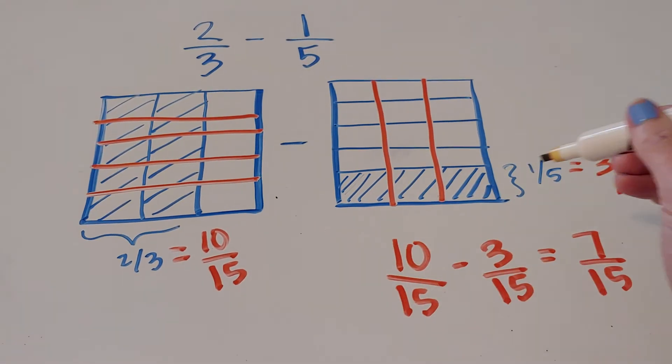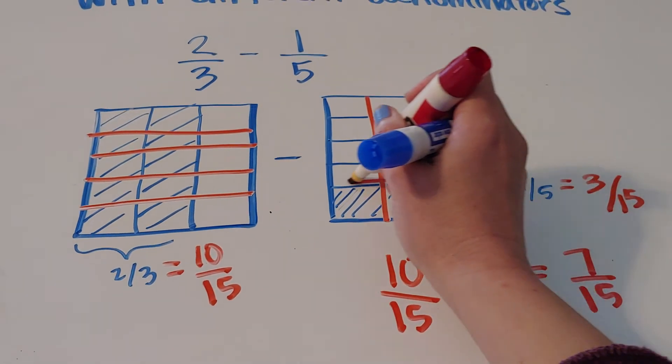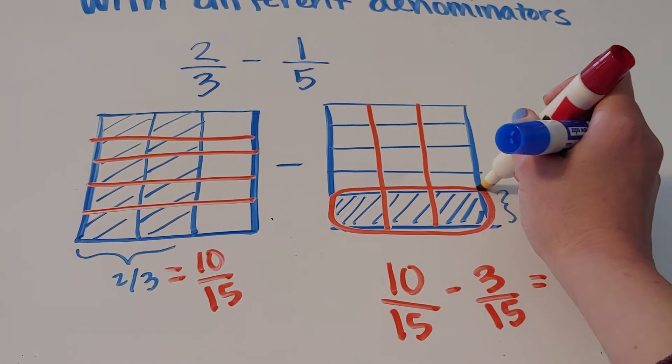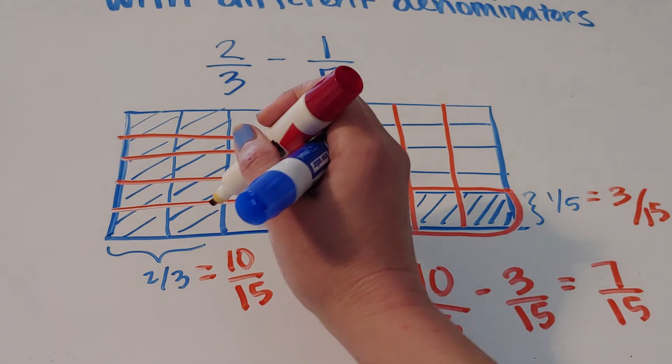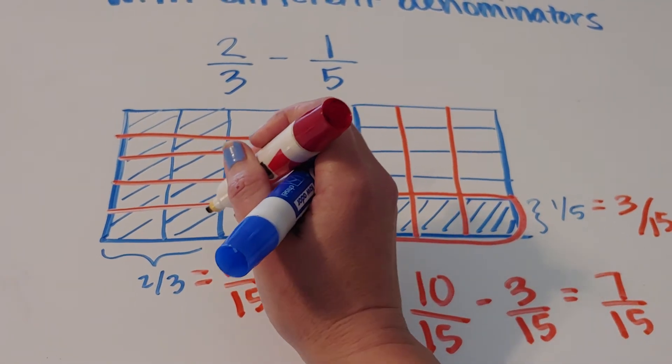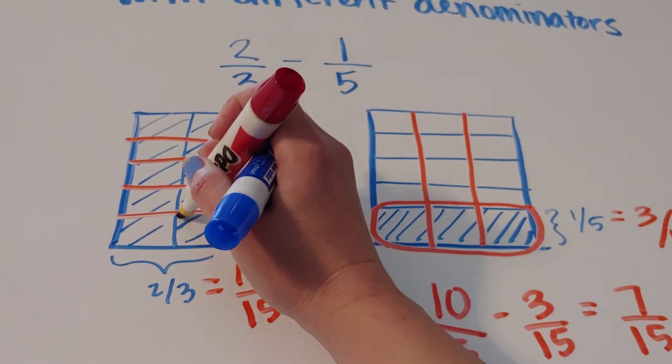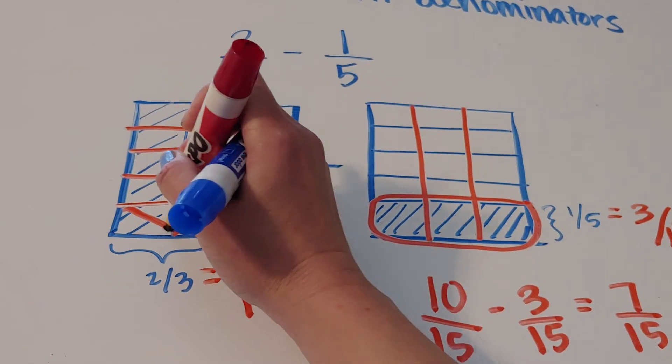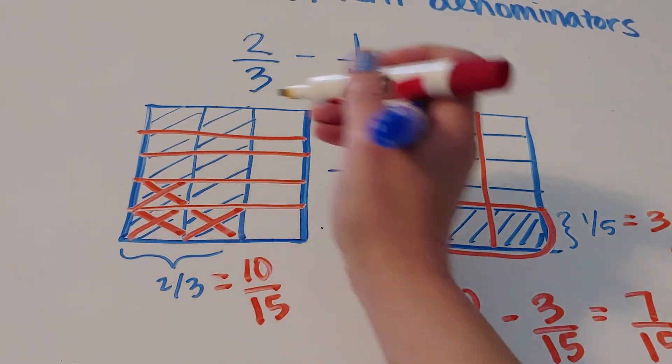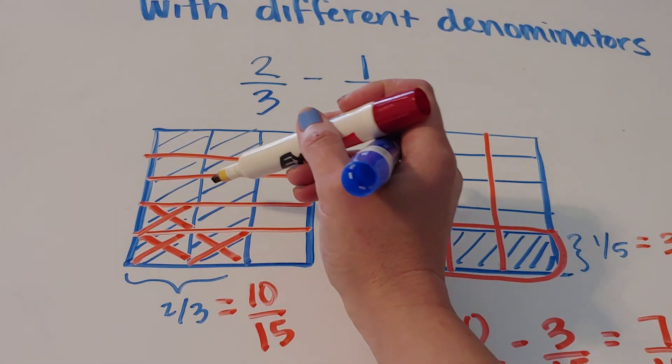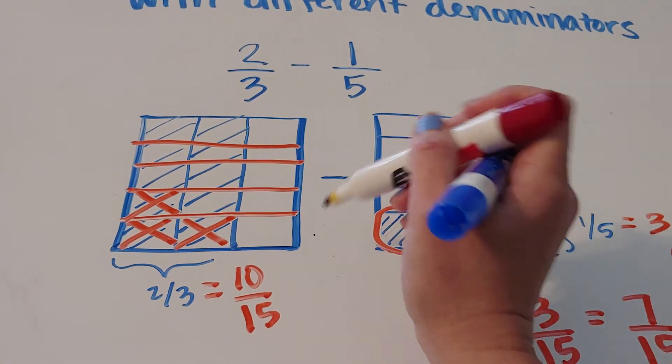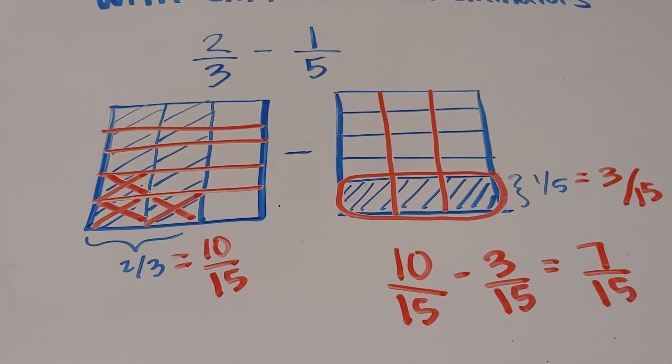So the idea here is that these three that we want to take away, how we're going to represent taking them away is by coming over here and crossing out any three of the shaded squares. So if I cross off three of these, you'll notice that we still have shaded seven, seven out of the total 15. So there's subtraction.